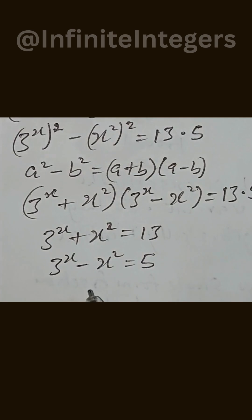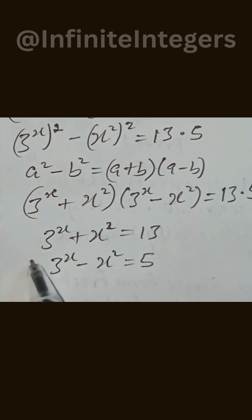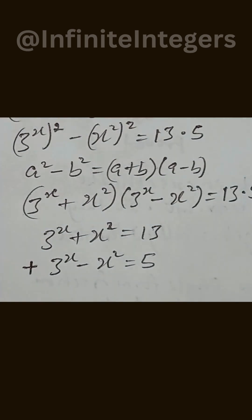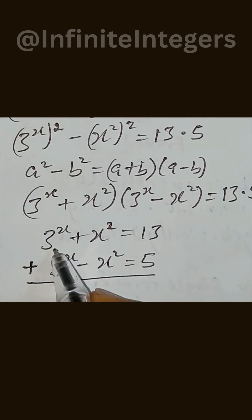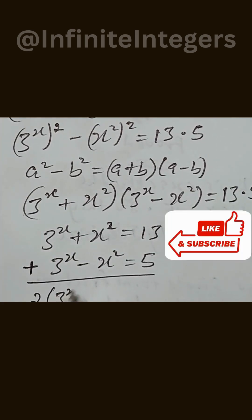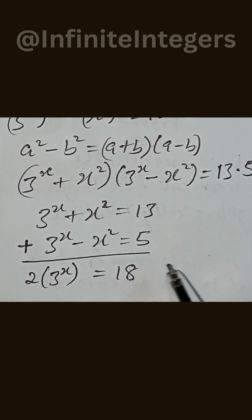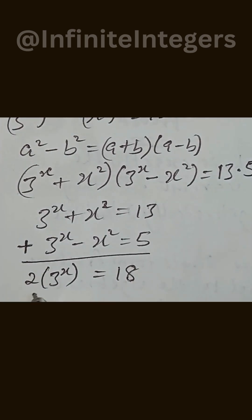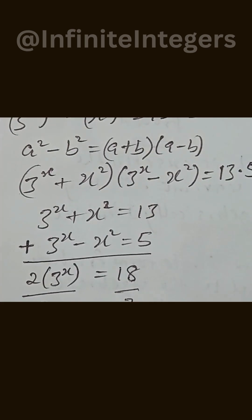We can add both equations. Adding both equations, we eliminate x squared, giving us 2 times 3 to the power of x equals 18. Dividing both sides by 2, we get 3 to the power of x equals 9.